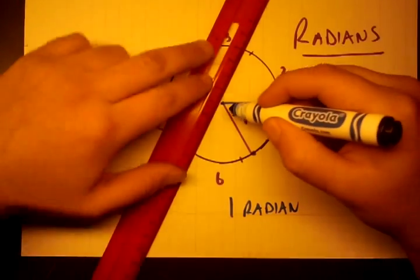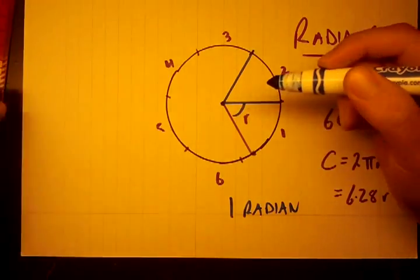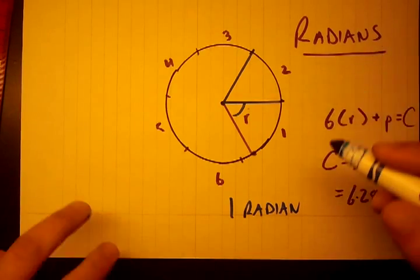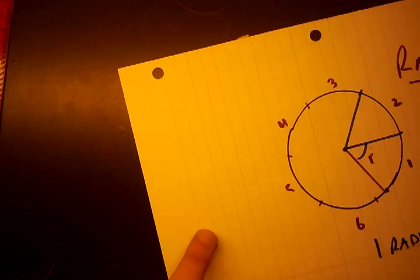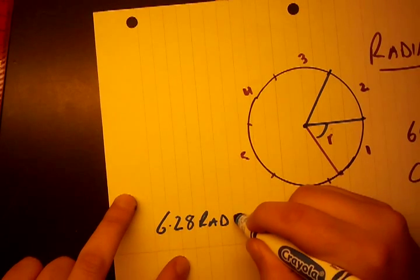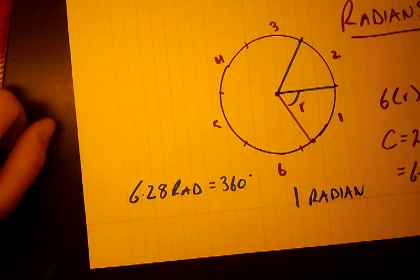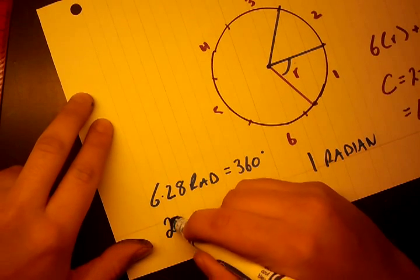Similarly, if we go around another one, now this whole angle formed is two radians and so on. And if we do equivalences, we know that there are 6.28 radians, we'll call it rad, in a circle. But there's also 360 degrees in a circle.